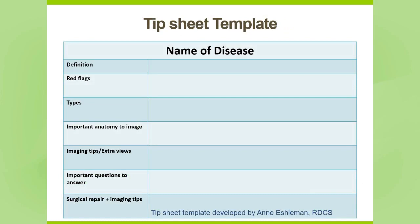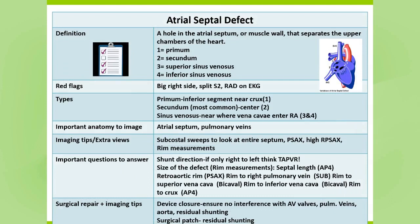One of our newer sonographers developed a checklist in a tip sheet format — something we all probably do in our heads every day for specific lesions, but haven't taken the time to put on paper. We are expanding our learning library binder to include tip sheets for a variety of lesions. This is an example of our tip sheet for ASDs. It has an illustration with four types of ASDs, descriptions, red flags in a patient who might present with an undiagnosed ASD, the different types, important anatomy to image, imaging tips or extra views, important questions to answer, and post-op imaging tips.